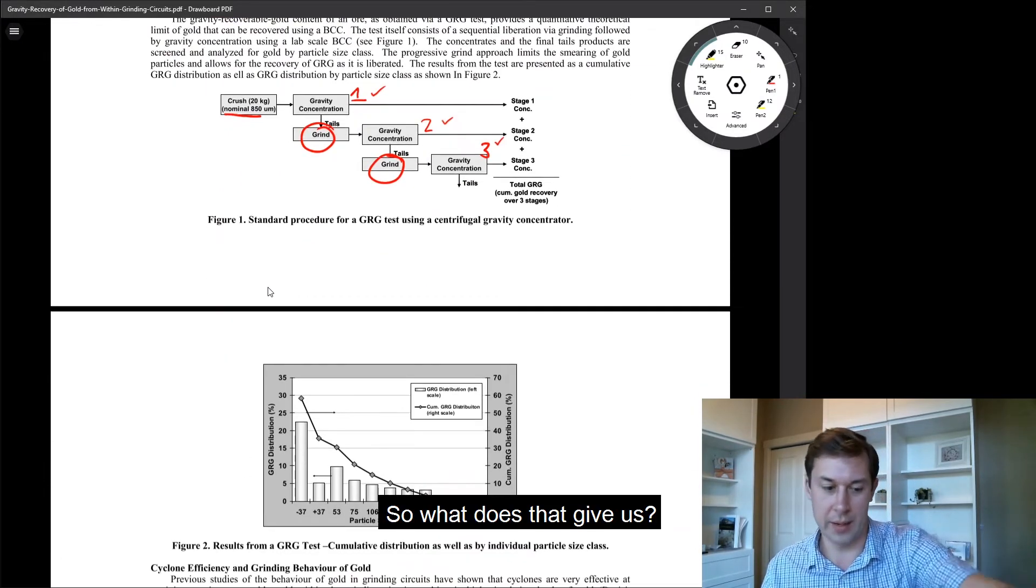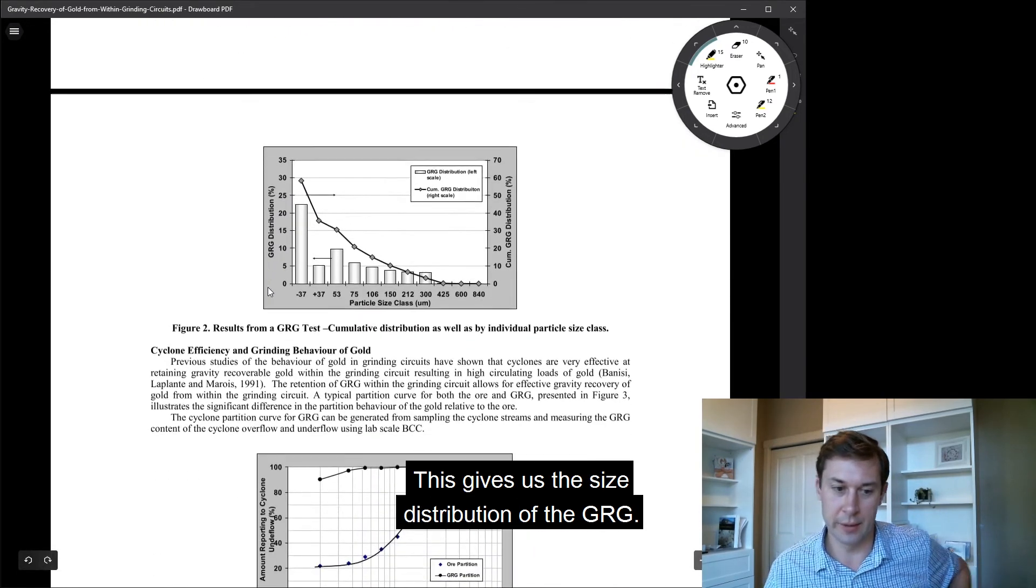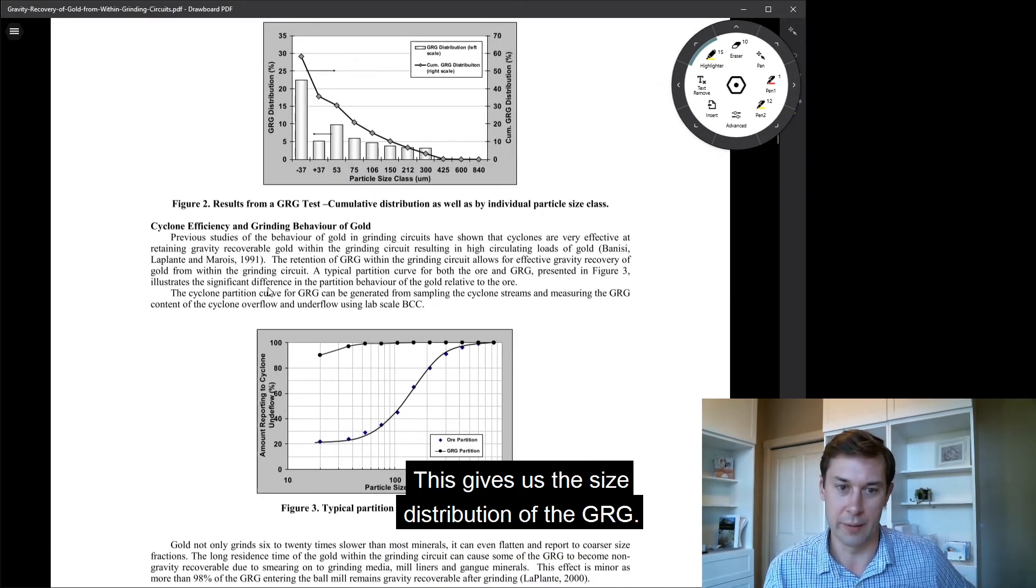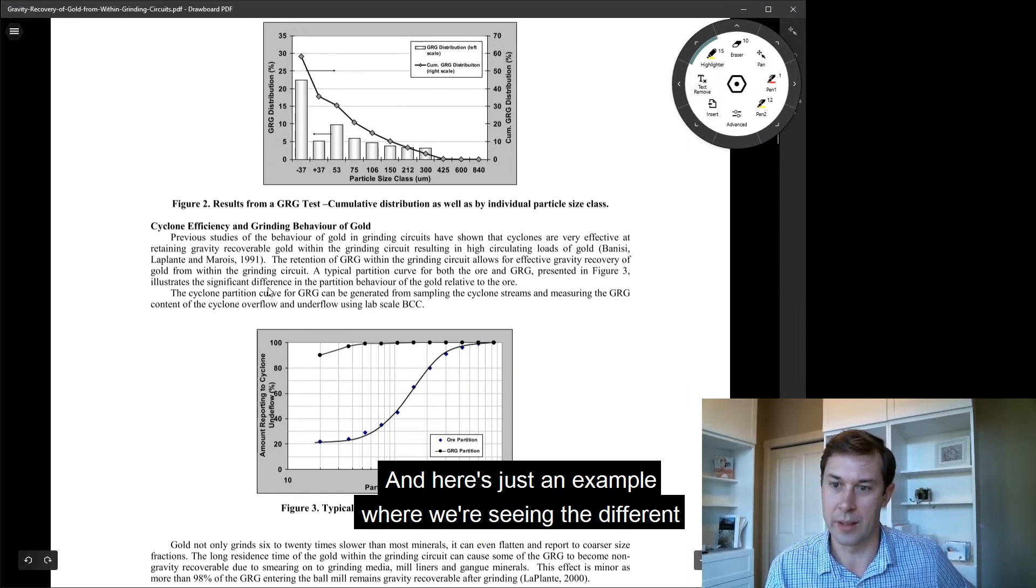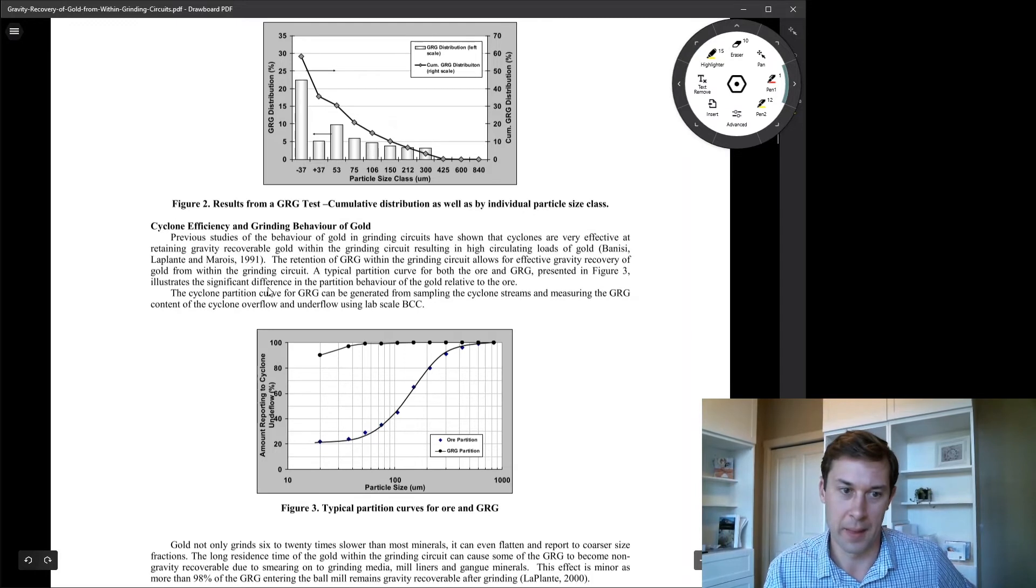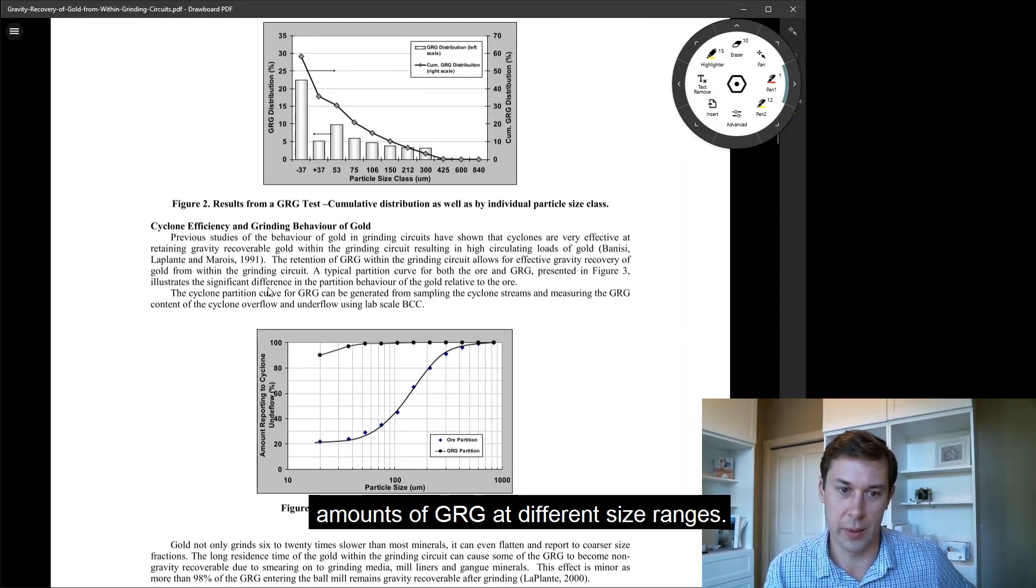So what does that give us? This gives us the size distribution of the GRG. And here's just an example where we're seeing the different amounts of GRG at different size ranges.